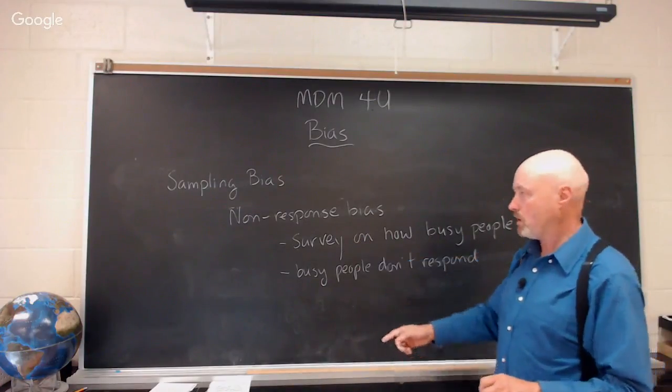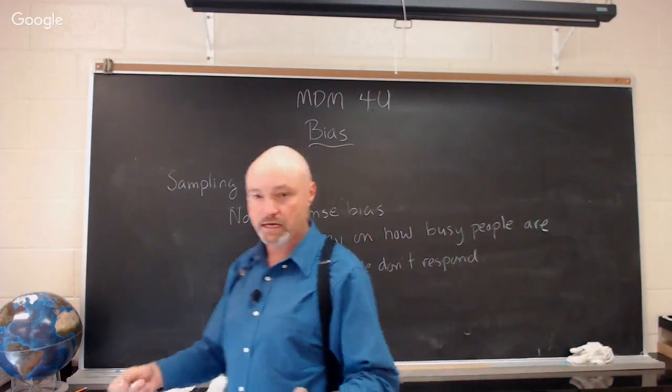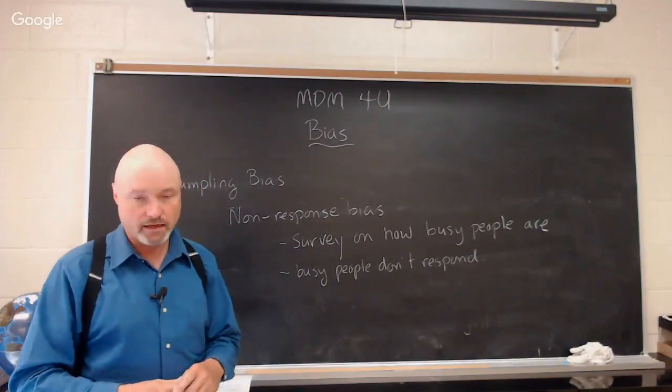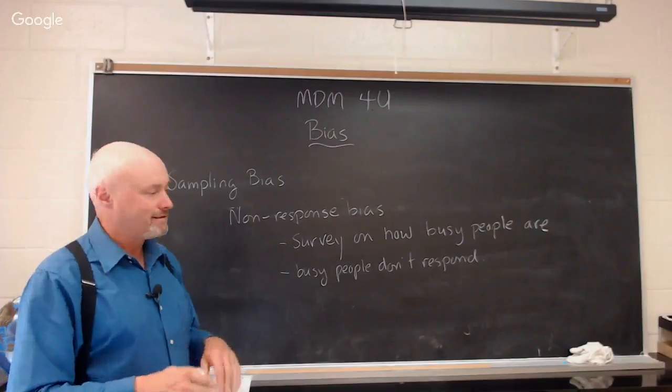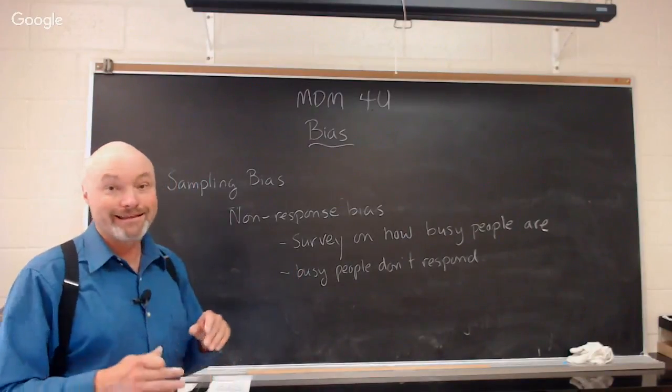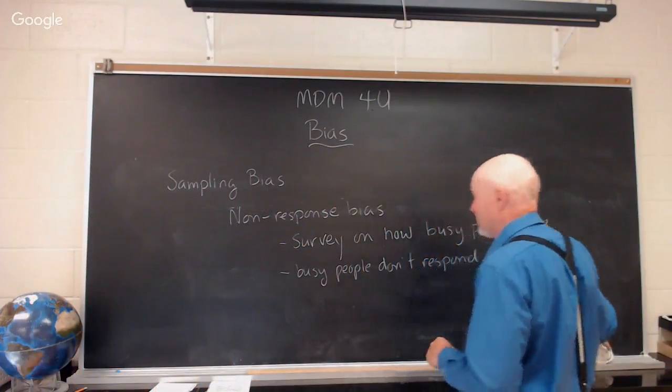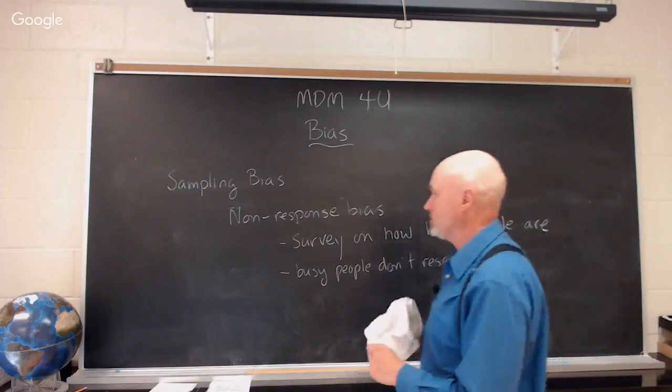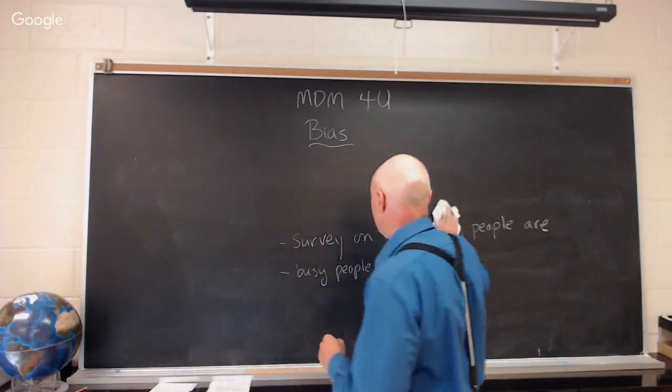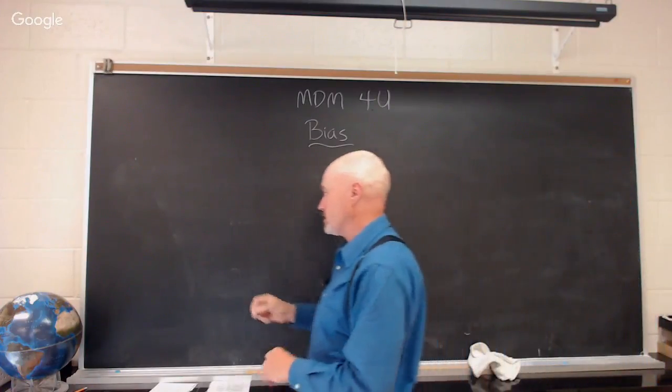And so you're going to get a result that under-represents the number of hours that people are busy for, and that's because the busy people are non-responders. Quite often you'll see they'll say, 'We've distributed 100 surveys, 10 came back,' and that's called non-response bias. Ninety people chose not to respond to that survey. They could be an important representation of what your population is. Notice non-response bias is still a form of sampling bias. Let's look at another kind of bias that looks just like non-response bias, minus the non.